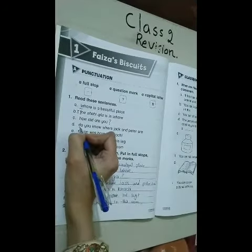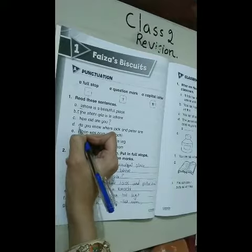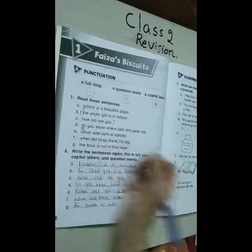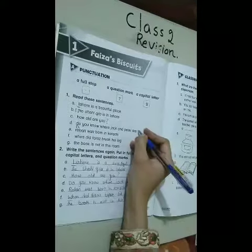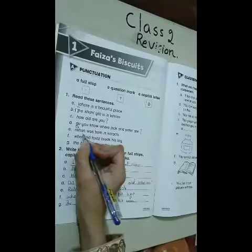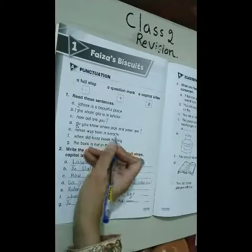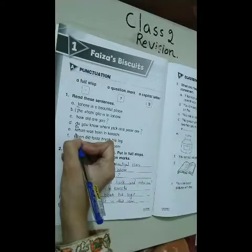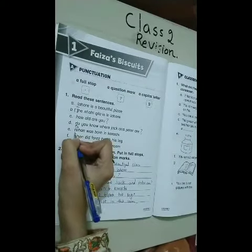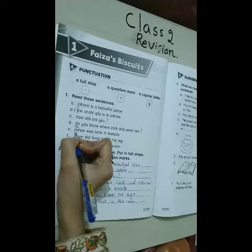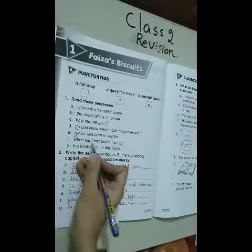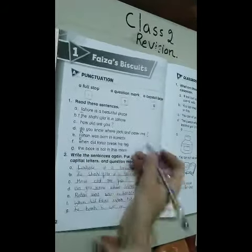See here — what is the D? It's a small letter. So we will make this D a capital letter, and what will we put here? A question mark. 'Rehan was born in Karachi.' Rehan starts with a small letter R, so we will change it to a capital letter. 'Where did Faraz break his leg?'